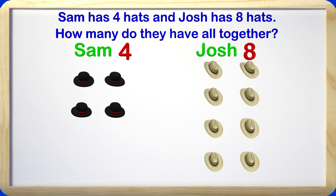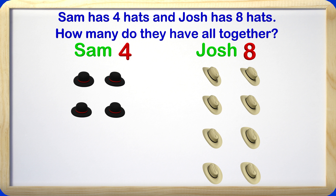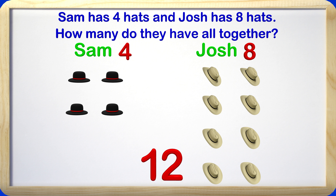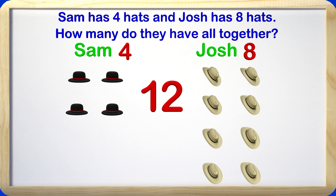We are going to use a strategy called counting on, which means we will start with one of the groups and count up from there to count all the hats. Let's start with the group of 8 and count on: 8, 9, 10, 11, 12. There are 12 hats all together.